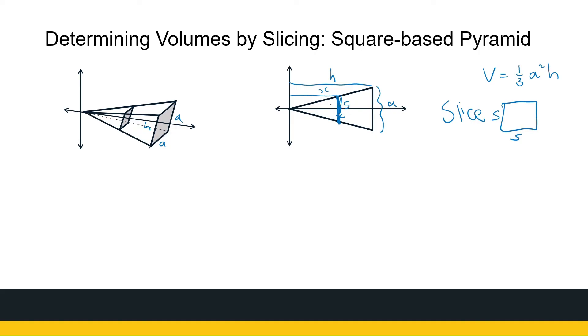So wherever I slice it, it's x units away, but the area of that slice will be S times S. So now we need to get these things in terms of each other, because we've got way too many variables here. So we're using similar triangles to see that a over S must be the same as h over x.